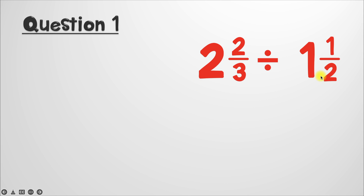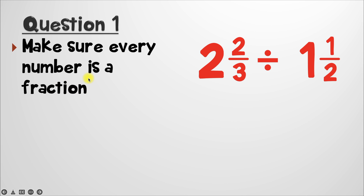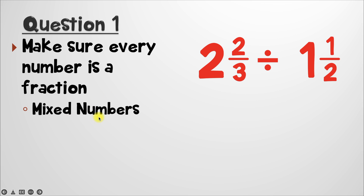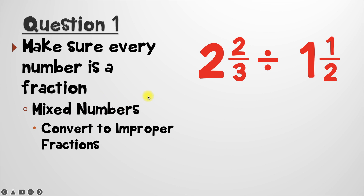Here's question one. Both of these values are mixed numbers, and they involve fractions. Whenever we have a division problem that involves any kind of fraction, you have to make sure you turn every number into a fraction. Now, even though mixed numbers have fractions, they are not fractions themselves. So what we have to do when we see mixed numbers is we need to make sure we convert them to improper fractions.